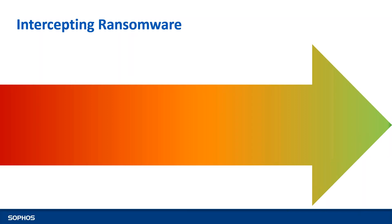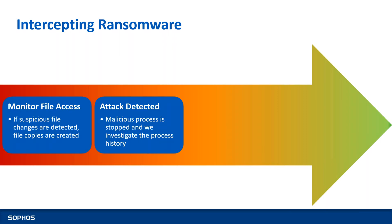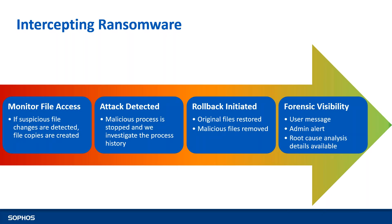Intercept X monitors processes for various types of exploits — buffer overflow, code injection, stack pivot — and whenever such techniques are used, they are blocked immediately. The second component is anti-ransomware. The moment rapid file encryption is detected, the process is cut down. Suspicious file changes trigger the creation of shadow copies and file caches. The rapid encryption process is stopped so no other files get encrypted. Then an investigation process — a root cause analysis — begins, identifying who did what, because of what, why, when, and how.